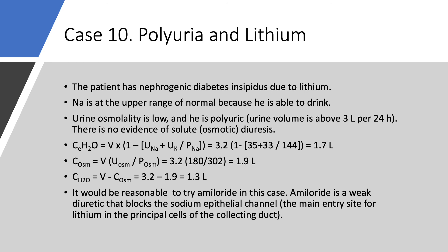In this patient with chronic nephrogenic DI, we have two options: either find an alternative to lithium, or use amiloride. Amiloride is a weak potassium-sparing diuretic with a unique characteristic — it blocks the epithelial sodium channel, which is the main entry site for lithium in the principal cells of the collecting tubule. So sometimes that's very helpful. In the following lecture, we'll discuss more interesting cases. See you then.